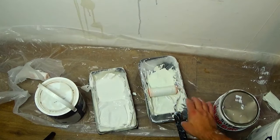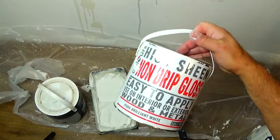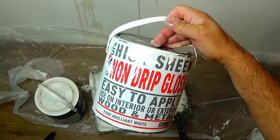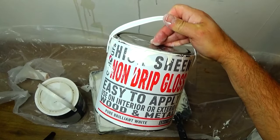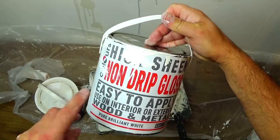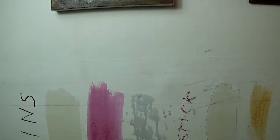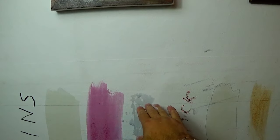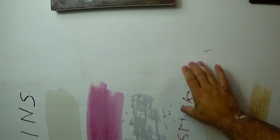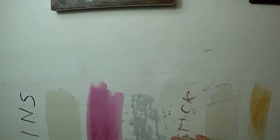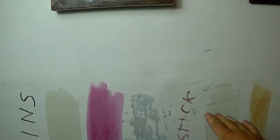And in here I've got the non-drip gloss. This is a high sheen for exterior, wood and metal. Exterior and interior. This is a solvent based paint. This is a water based paint. So you see this line here. I'm going to apply the water based emulsion on top, so up to here. And below this point I'm going to apply the non-drip gloss high sheen. So you will see how the paints cover the stains.